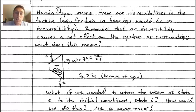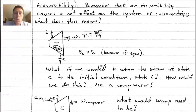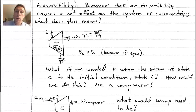Consider this question: we take steam at an inlet state, expand it to a known exit state, and make a certain amount of work. What would we have to do to the steam at that exit state to return it back to its initial state, state i? In other words, how can we make this process reversible — how can we return the steam to its initial state?